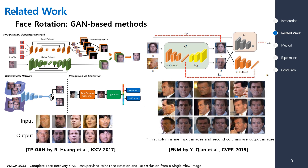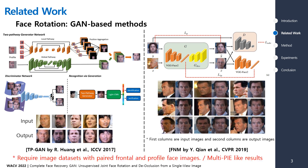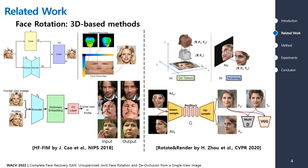This leads to generating MultiPIE-like results similar to images in the MultiPIE datasets. 3D-based approaches leverage 3D information as prior information for rotations. Rotate-and-render does not require a paired dataset due to rotate-and-render operations, and can generate high-quality frontalized or rotated results, but does not consider occluded face images.